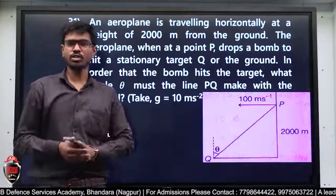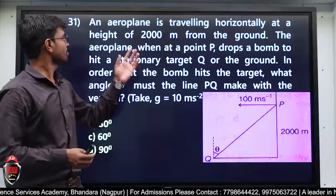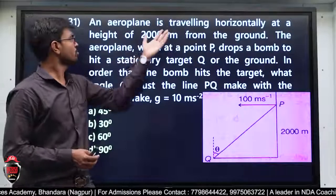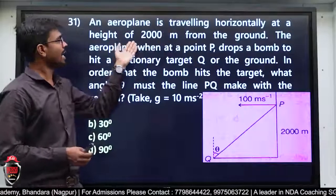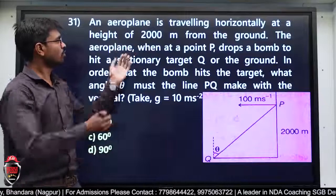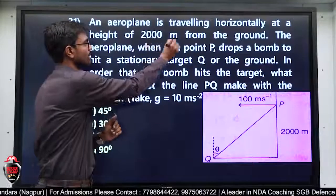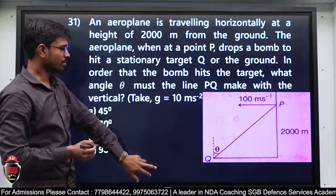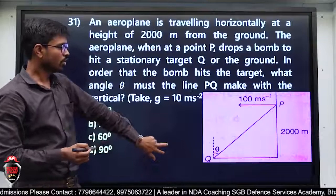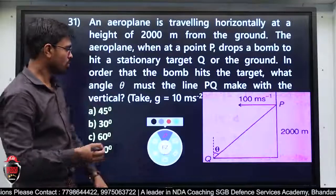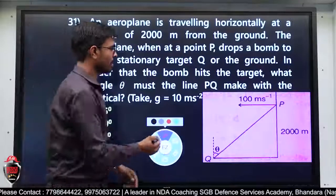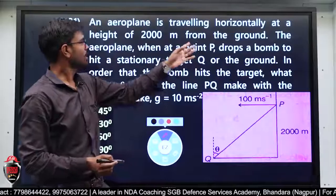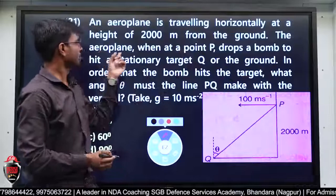अगला question पहले read करते हैं। Question में दिया है: An airplane is travelling horizontally at a height of 2000 meter from the ground। जमीन से 2000 meter ऊपर से वो उड़ रहा है।